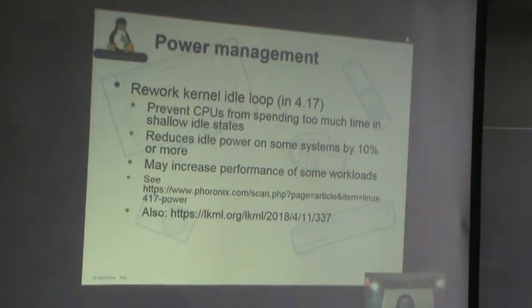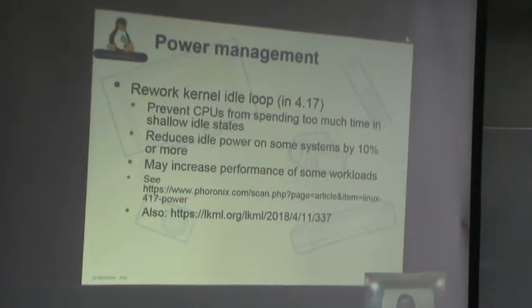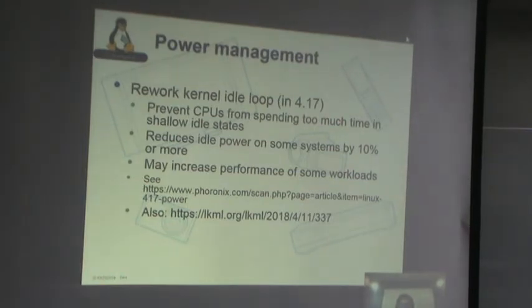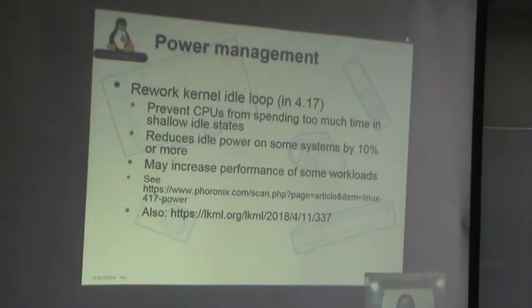In kernel power management, one of the big things was a rework of the kernel idle loop. The idea is to prevent CPUs from spending too much time in shallow idle states. The effect in 4.17 is that it reduces idle power on some systems by about 10% — so when the system is idling, your power consumption goes down. Even when you have some workloads, you're getting performance and power management benefits. There are some really good charts and graphs at Phoronix showing the performance improvements.